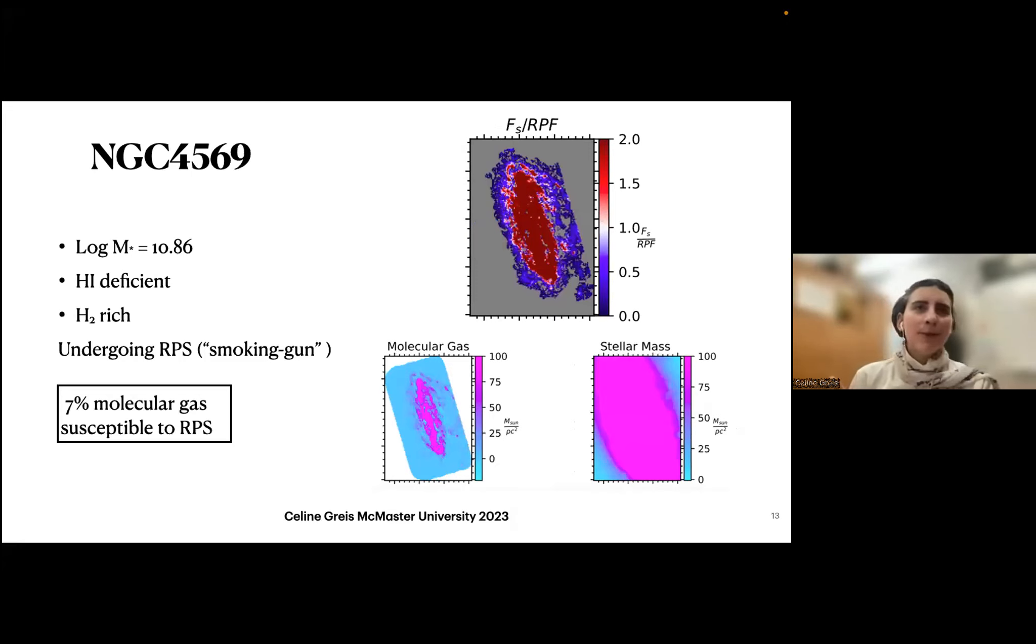Then there's NGC 4569. This one is also cool because it's known as a smoking gun, which is a term for a galaxy that's currently undergoing ram pressure stripping. What's typical for these galaxies is that they are usually H1 deficient, but they still have quite some molecular gas. Here again, you can see that the structure of the molecular gas determines its resistance.